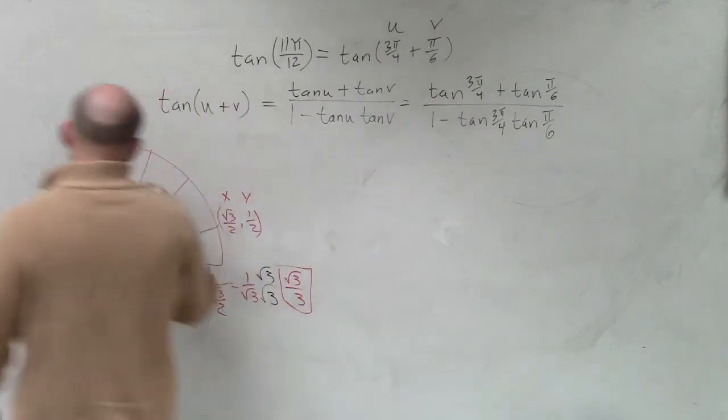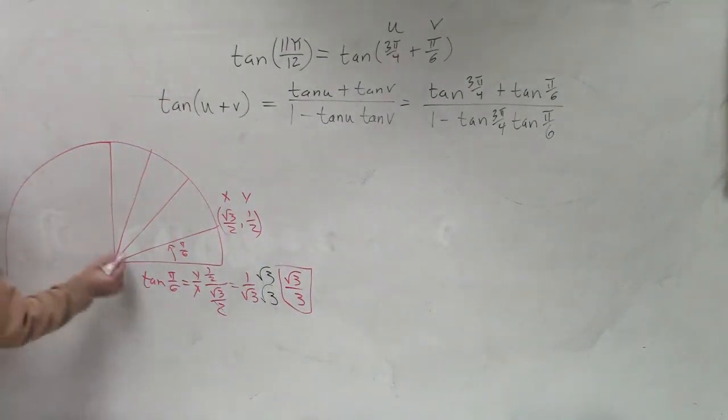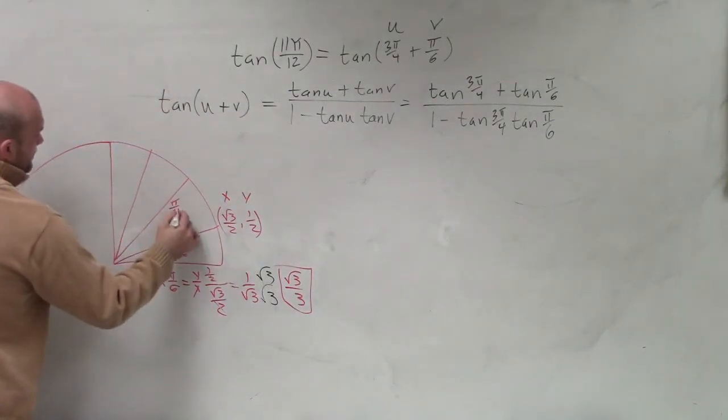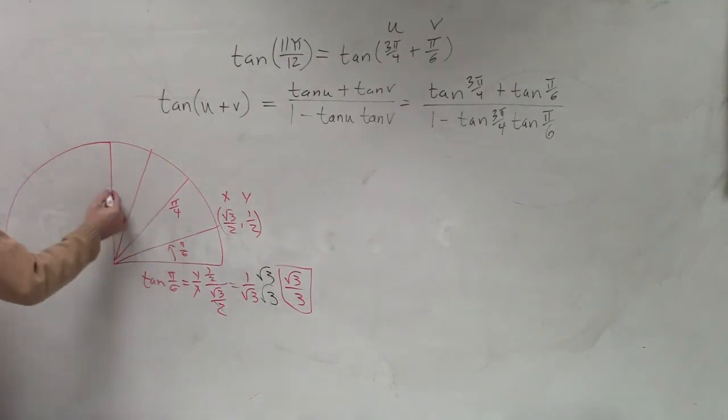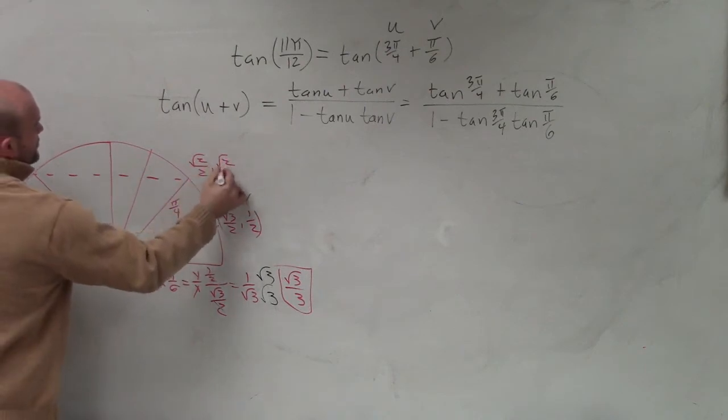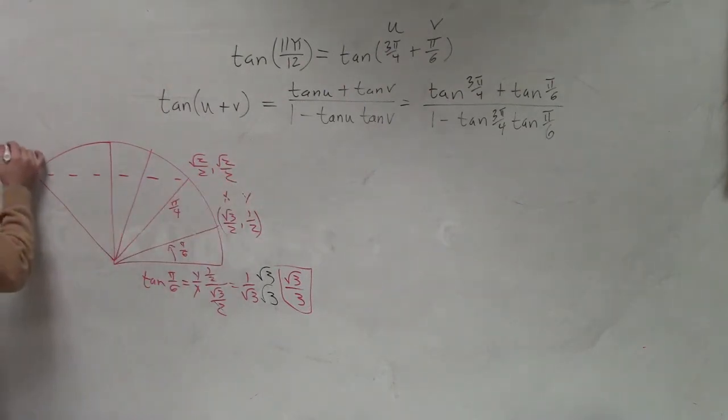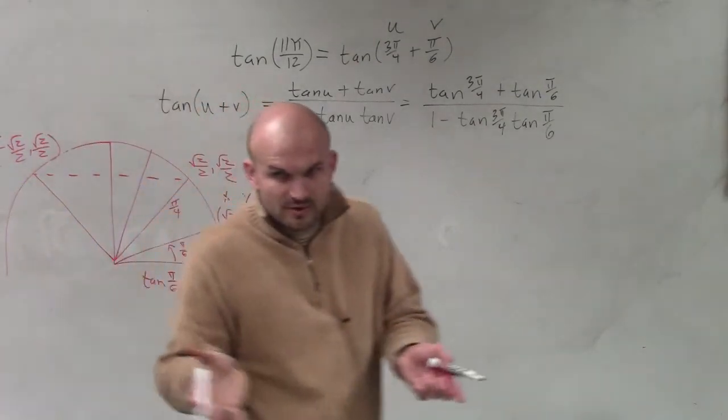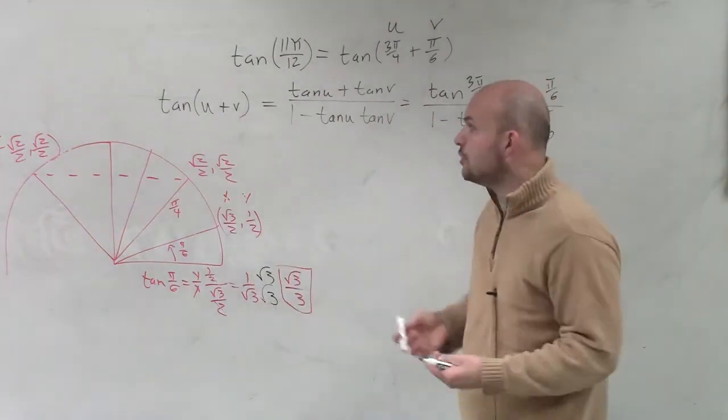Then we have 3π over 4. I know this is π over 4. So 1π over 4, 2π over 4, 3π over 4, that's over here. It's a direct reflection. If this is square root of 2 over 2, comma square root of 2 over 2, this is going to be negative square root of 2 over 2, comma square root of 2 over 2. Does everybody understand how I can take a look at what's in the first quadrant and just reflect it over?